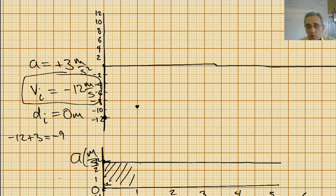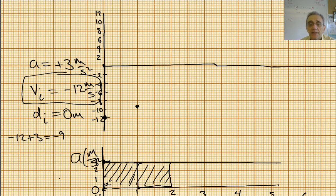What's this area from 1 to 2? That is another 3, because 2 minus 1 times 3 is another 3. So we take another 3 away — negative 9 plus 3 gives us negative 6. We'll come over here to 2 seconds and come up to negative 6.